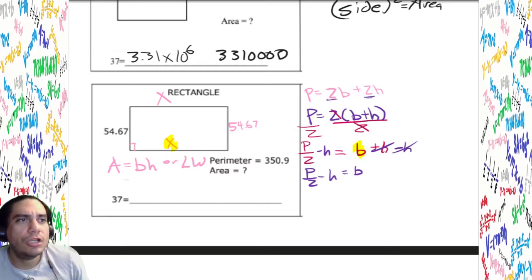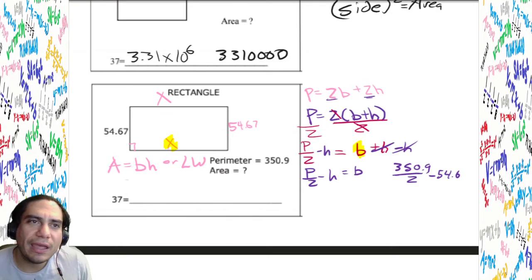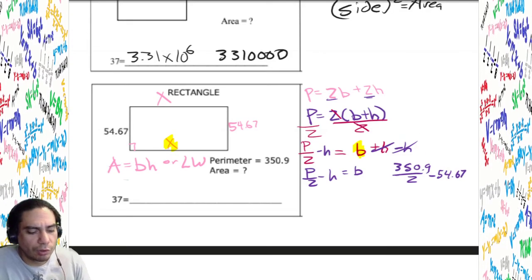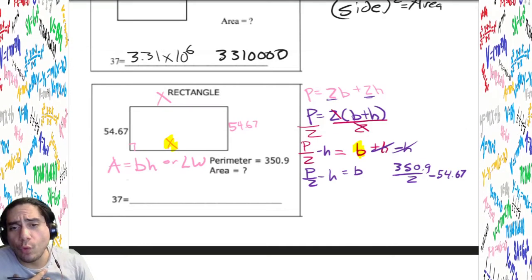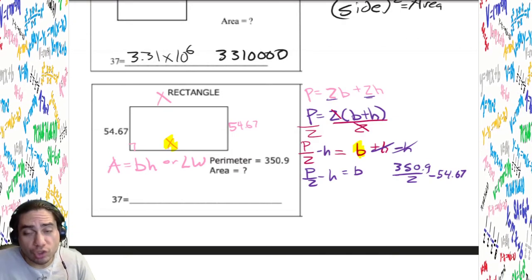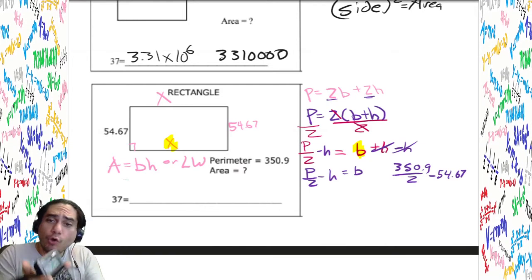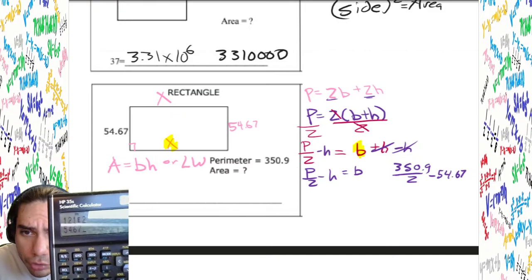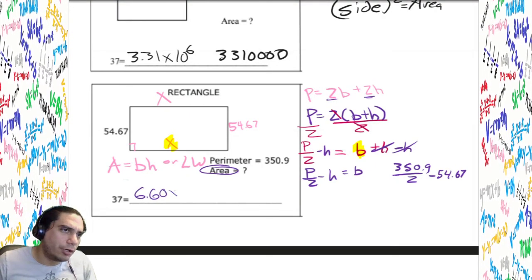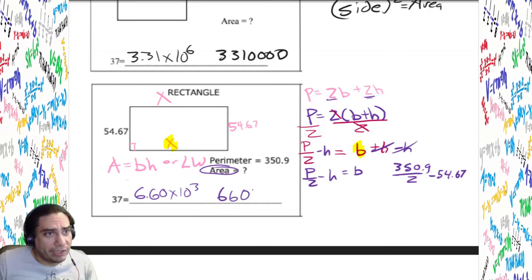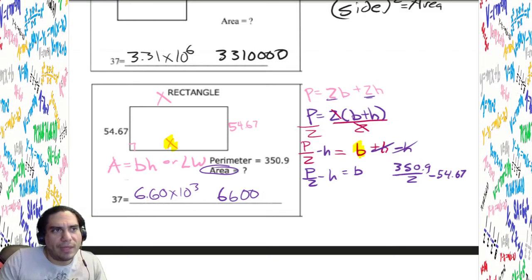So we take 350.9 ÷ 2, then subtract 54.67, and we get the missing base — about 121, or 1.21 times 10 to the second. Now for the area, we multiply that base by the height: 121 times 54.67. We get 6.60 times 10 to the third, or 6,600. Third power means thousands — that's why it's 6,000-something.